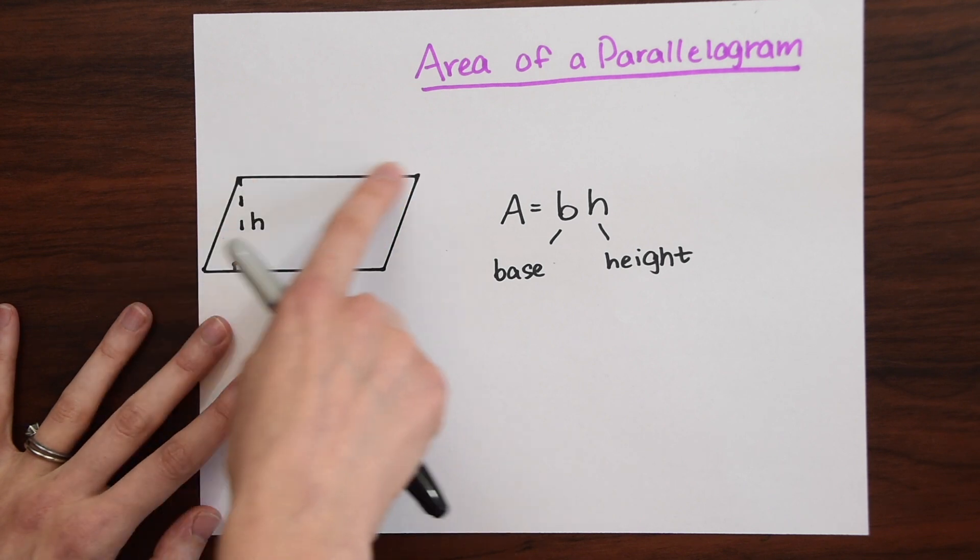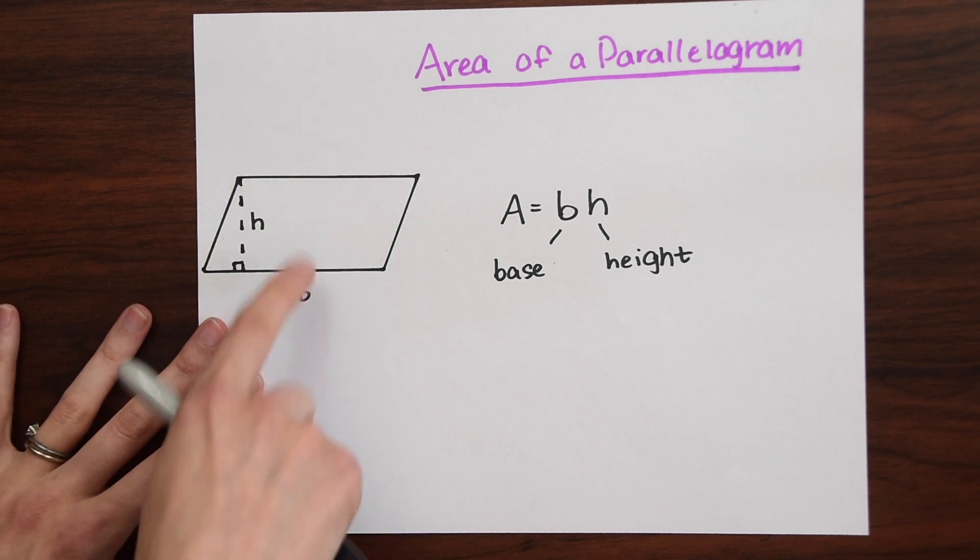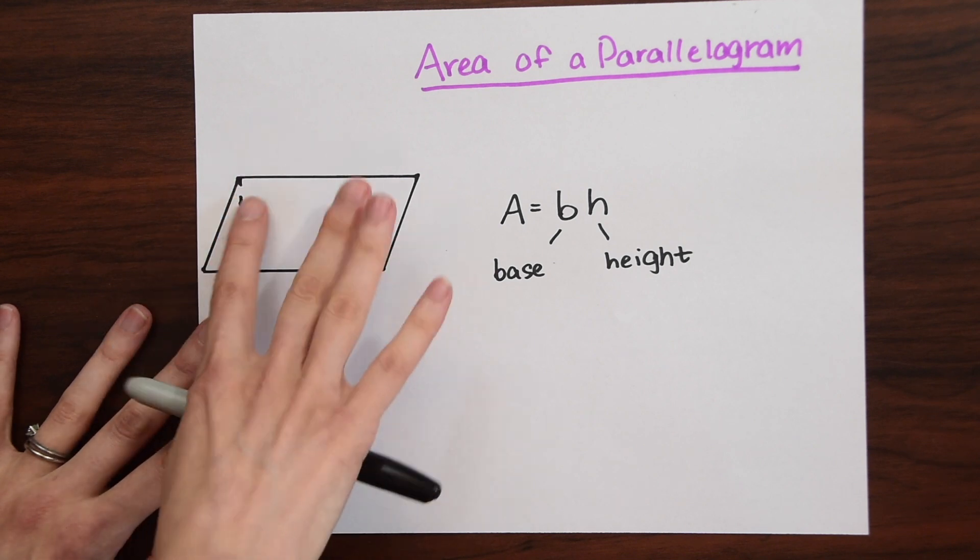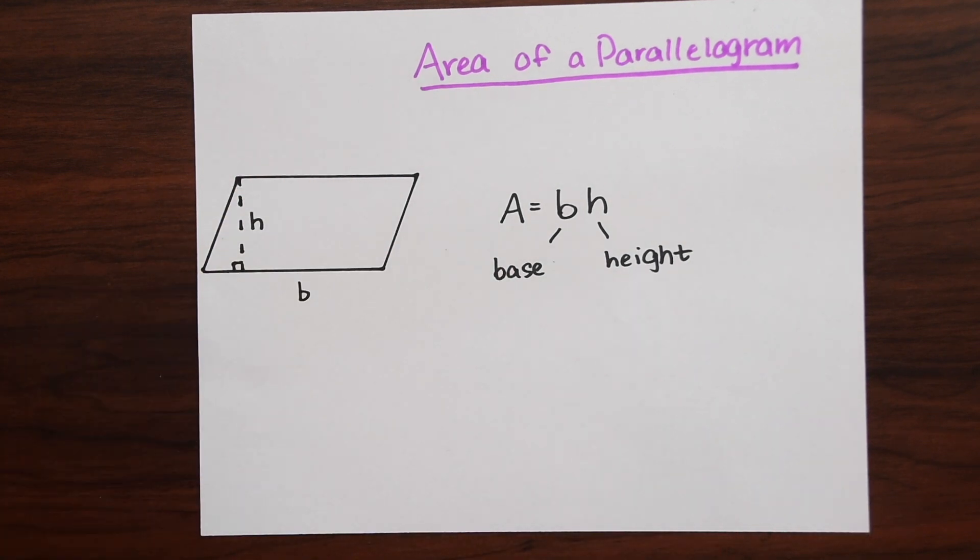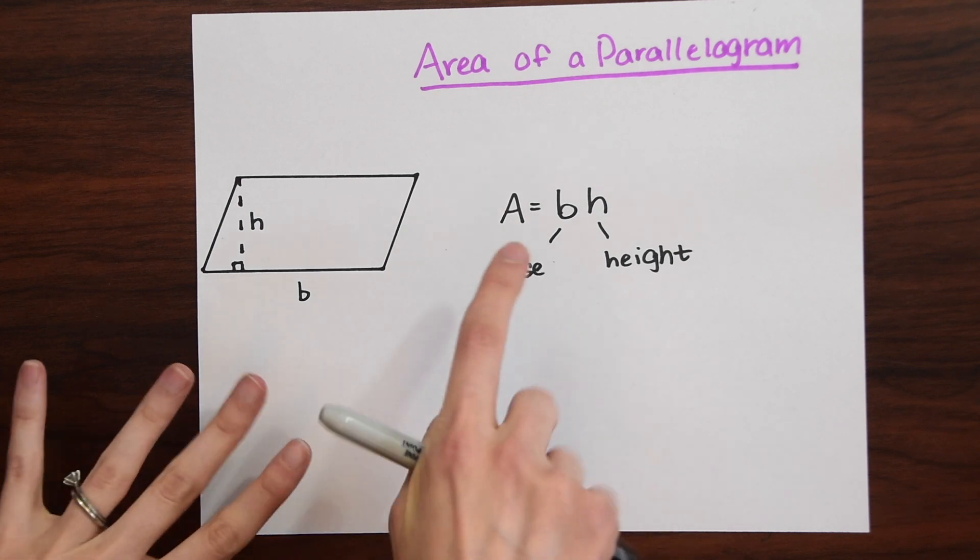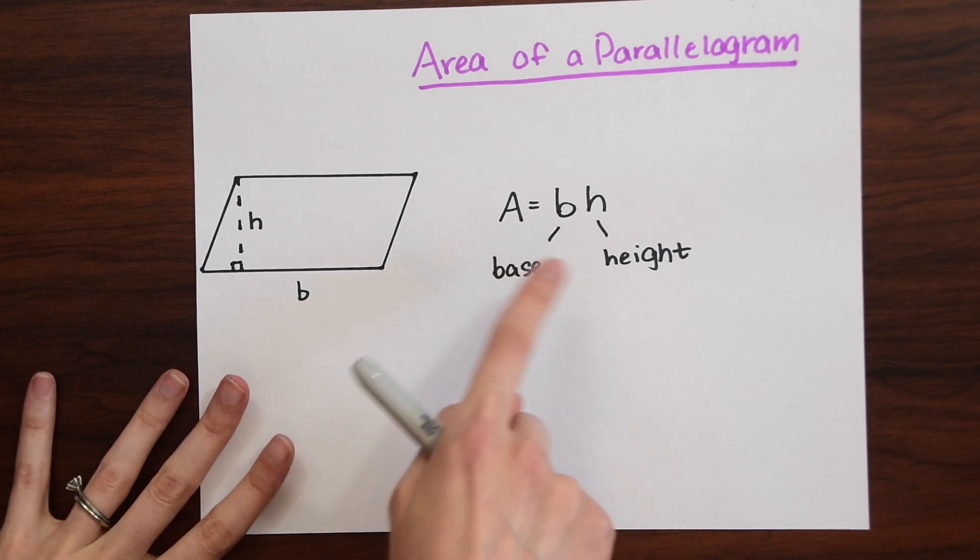This up here can also be considered the base. It's always just that longest side and these are always equal to each other. The opposite sides are always equal when it comes to a parallelogram. So here is our formula area equals base times height.